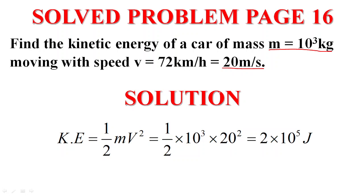First we write the rule or formula. Kinetic energy equals half times mass times v power 2. Equals half times mass 10 power 3 times speed 20 power 2. V squared equals 2 times 10 power 5 joules.